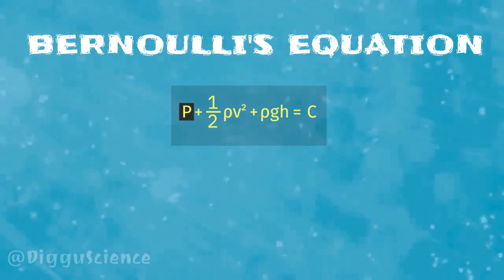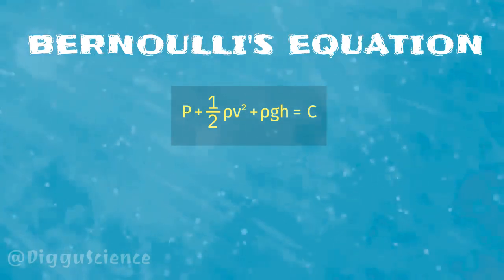There is a pressure quantity P here. What is this pressure? To understand this, consider the following illustration. This is a pipe. Fluid flows from left to right. Let's say we want to calculate the pressure at this point.